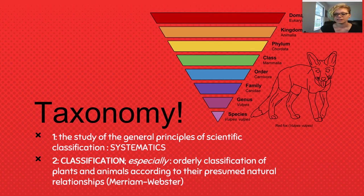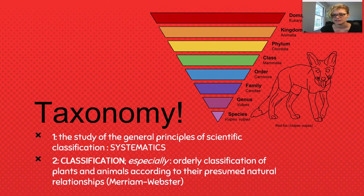Essentially, the levels of classification start with very wide sweeping categories. The broadest category is domain, with each subsequent category becoming more and more specific, until it is narrowed down to a single species, and in some cases a subspecies if they exist.